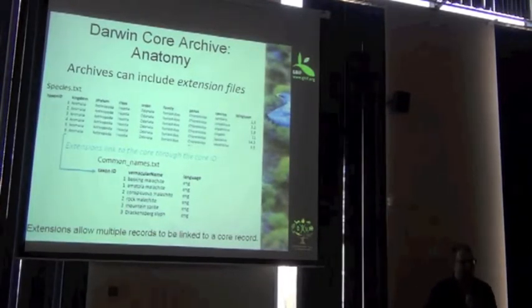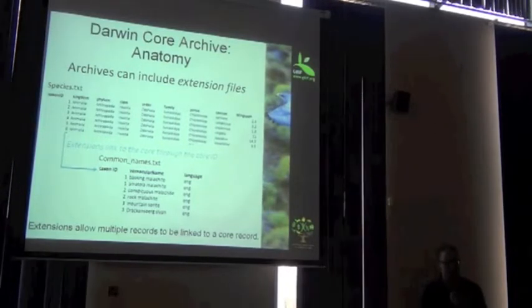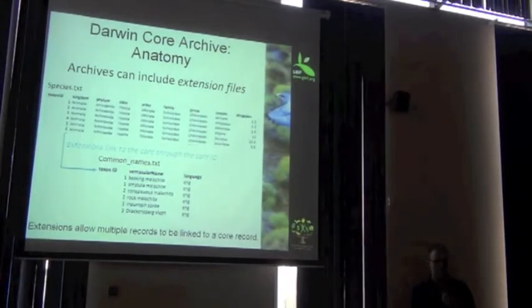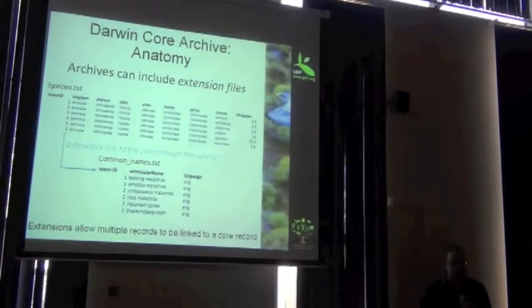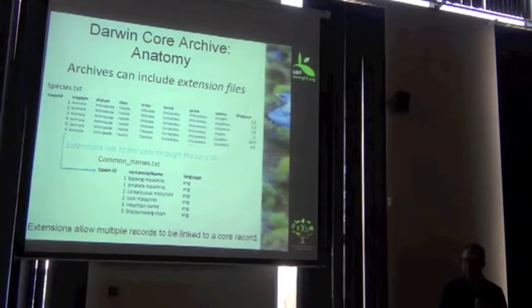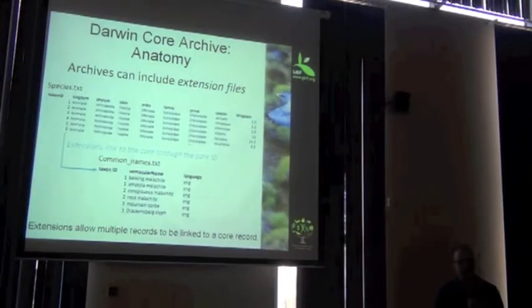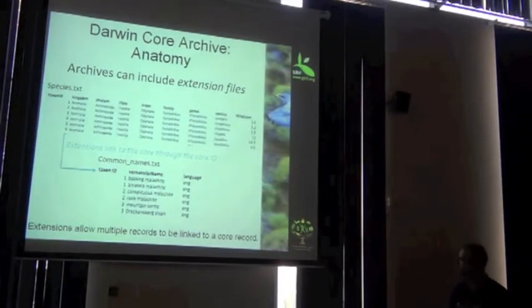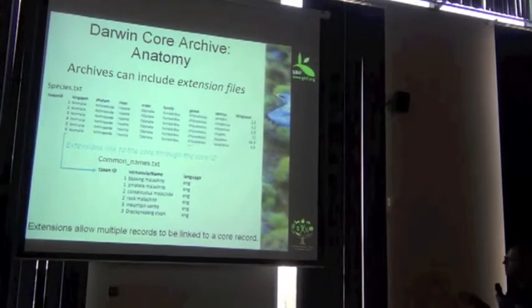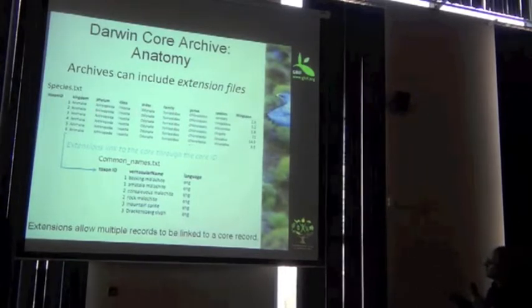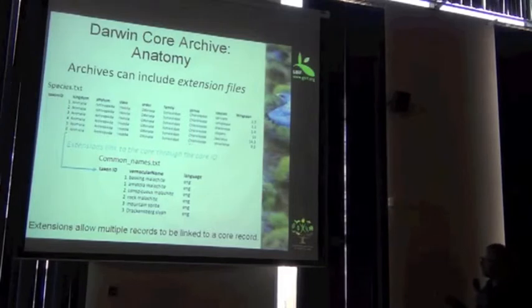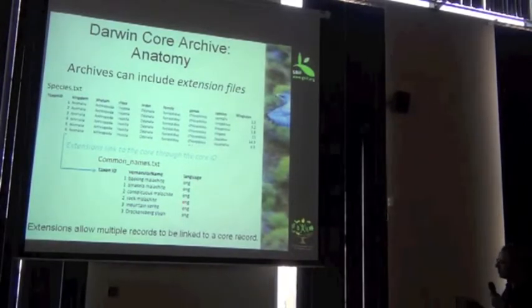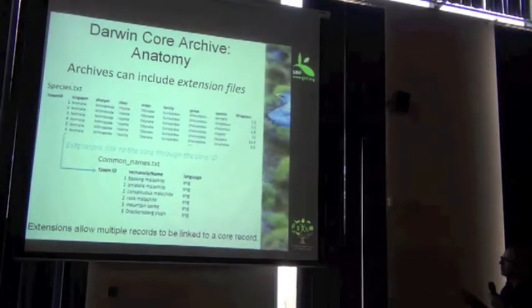The meta.xml file has the mappings that match the columns in the core file to Darwin Core Archive. Alright, so the next thing in that big diagram, the anatomy of what is a Darwin Core Archive, is that the core file can have an extension. Out of these 172 terms in the Darwin Core, perhaps it doesn't allow for some of the other things that you'd like to publish. And it also is a more convenient way to share that information in a more organized manner.